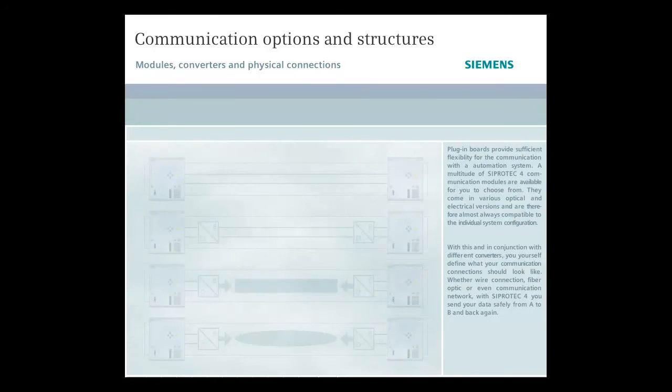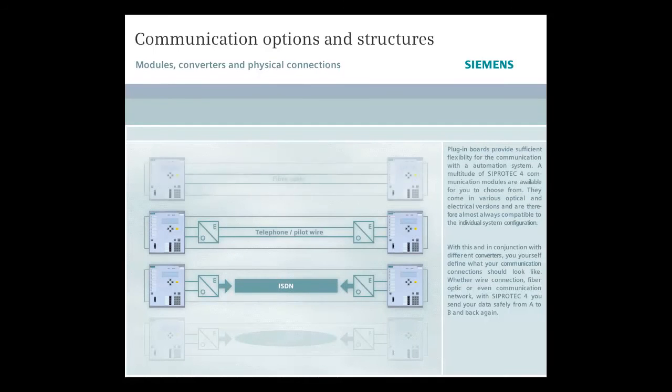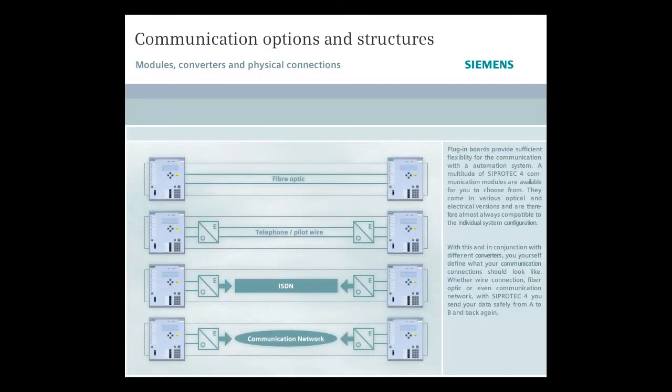With this and in conjunction with different converters, you yourself define what your communication connections should look like, whether wire connection, fiber optic, or even communication network. With C-Protect 4, you send your data safely from A to B and back again.